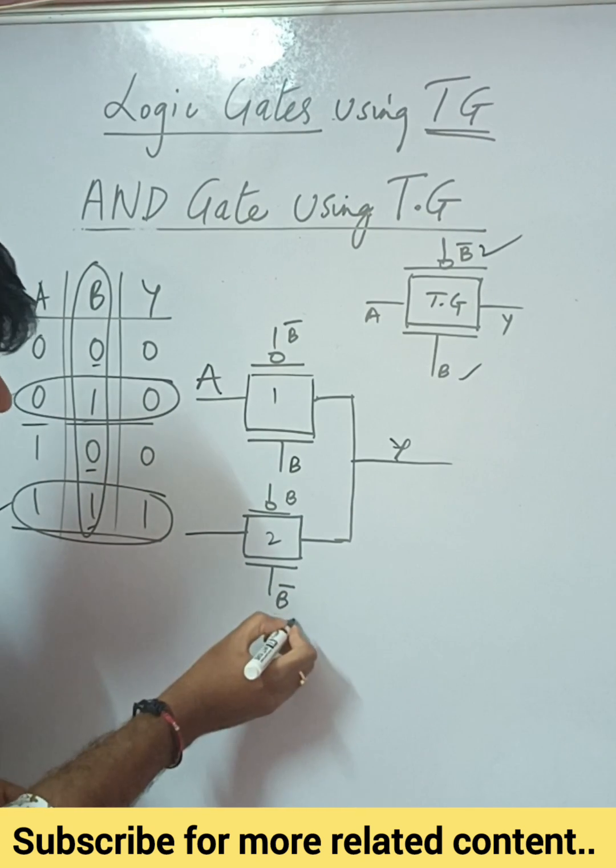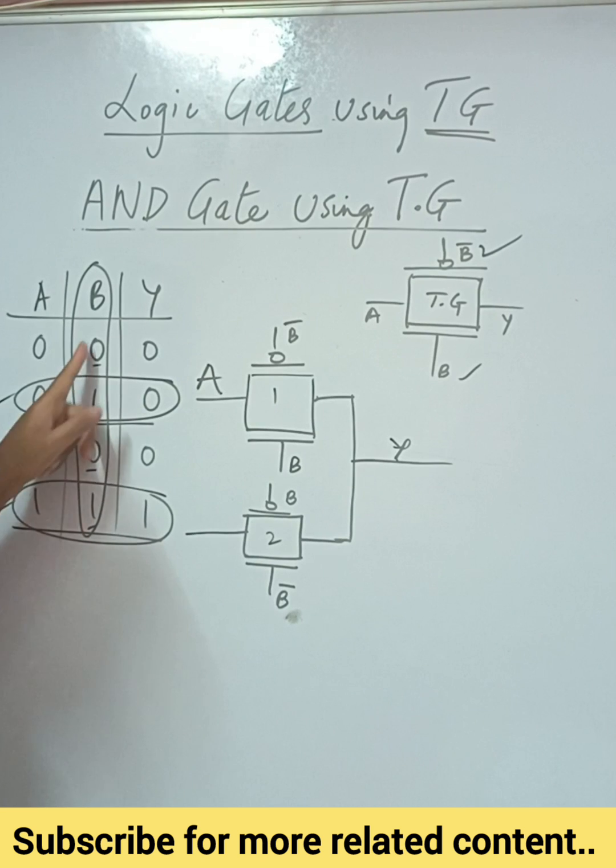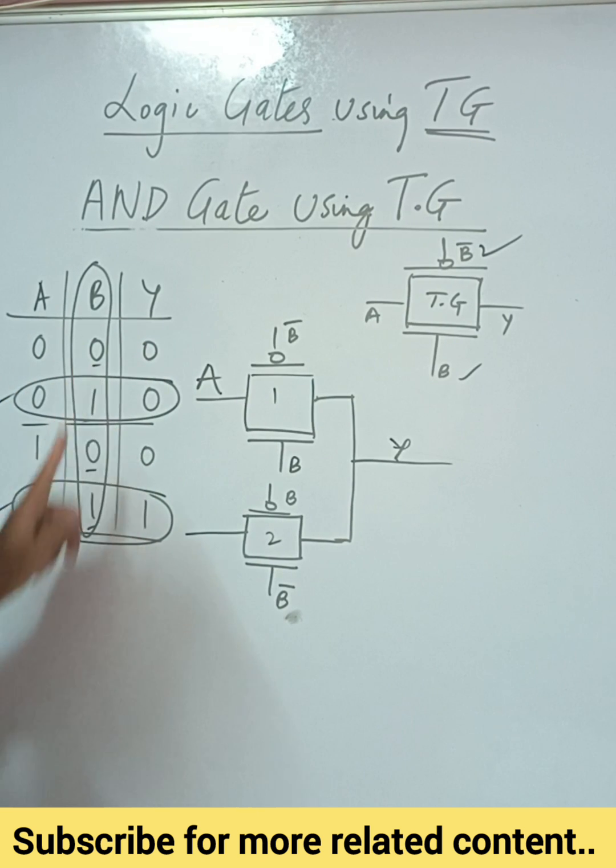Now the second case, when b is b bar, that is here, then b is equal to zero. When b is equal to zero, what will happen? There are two combinations again. So when a is zero, y is zero when b is zero. And when a is one, y is again zero when b is zero.